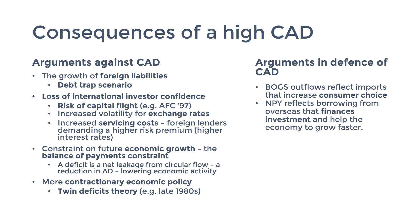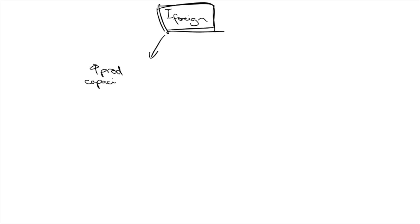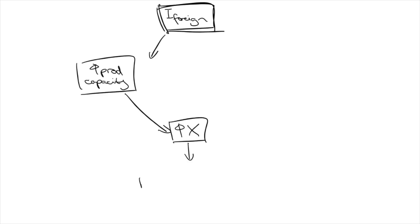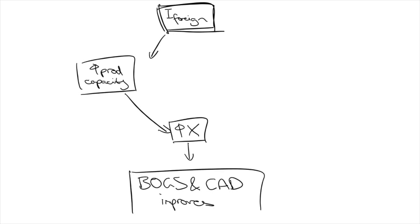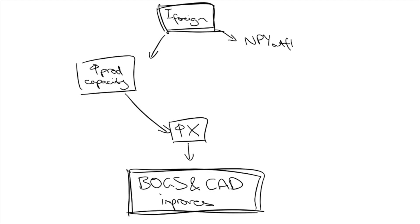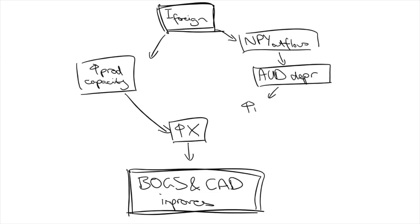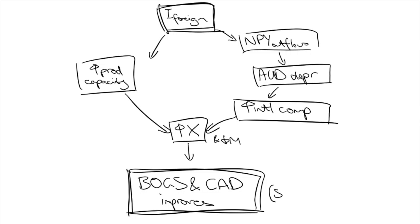Building on these two points is the third argument: the CAD is sustainable by exports. Investments increase our productive capacity, which means we will develop more exports, which will fix the deficit in the long term. Furthermore, current account outflows cause our dollar to depreciate, which boosts our international competitiveness, making our exports even more attractive and reducing the incentive to buy imports. That's how the CAD is sustainable by exports in the long term.